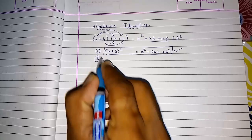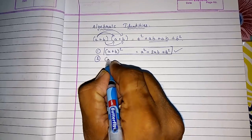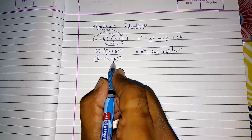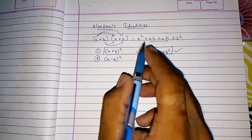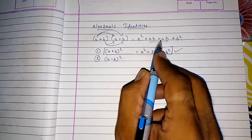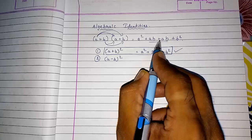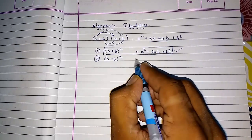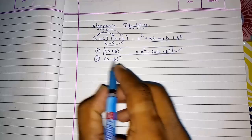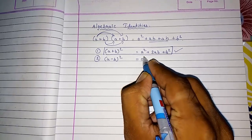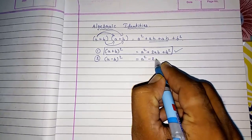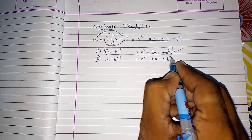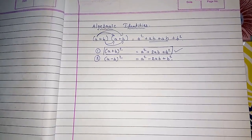Then identity two. Instead of plus, if minus is there — if you are multiplying A minus B into A minus B — what will happen? Instead of plus, both times you will get minus AB. So the direct short form for A minus B whole square is A square minus 2AB plus B square. This is your identity number two.